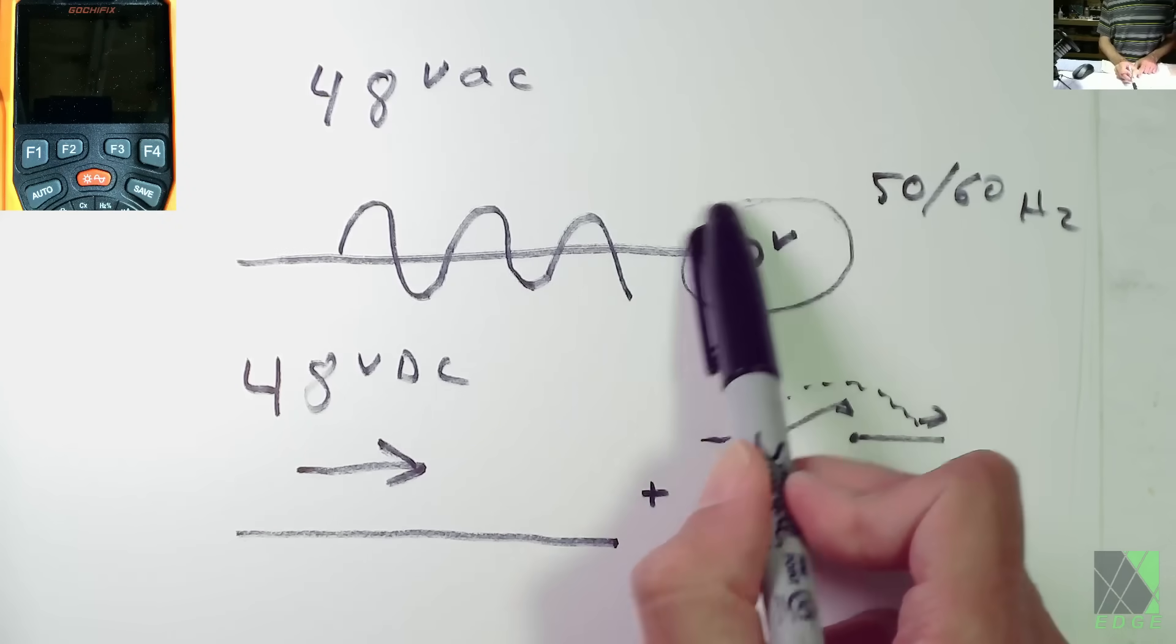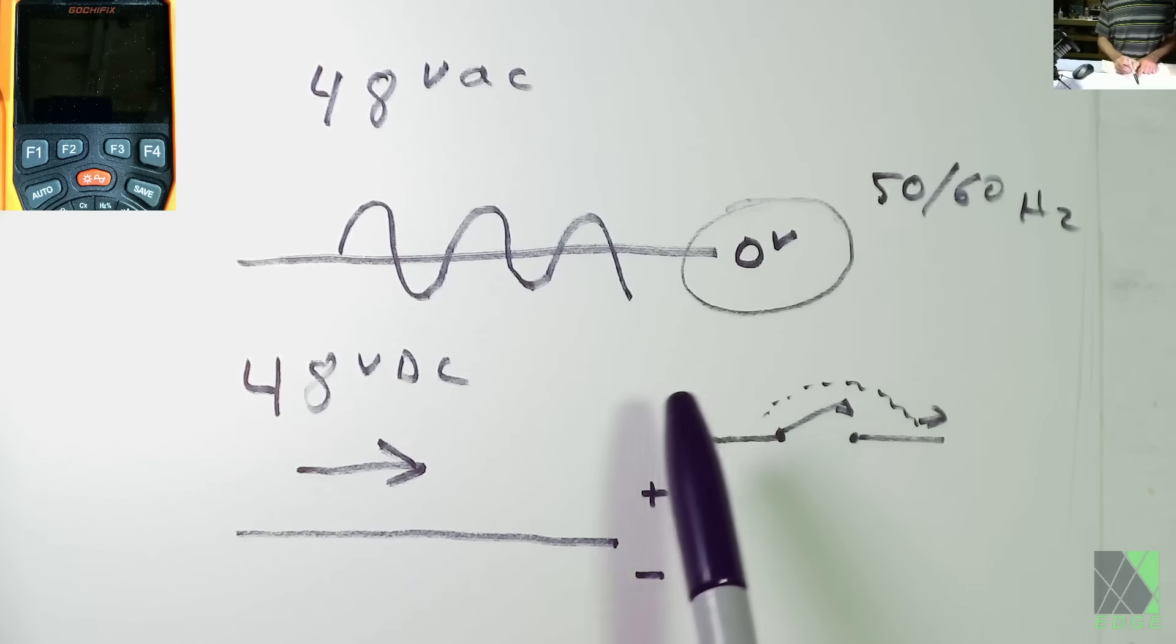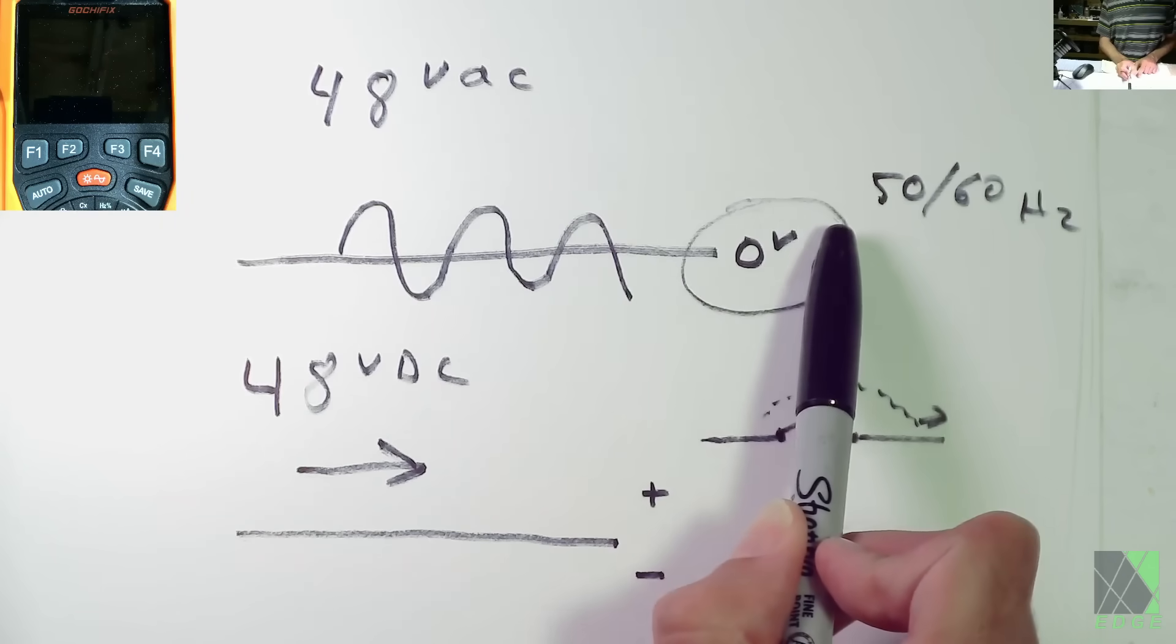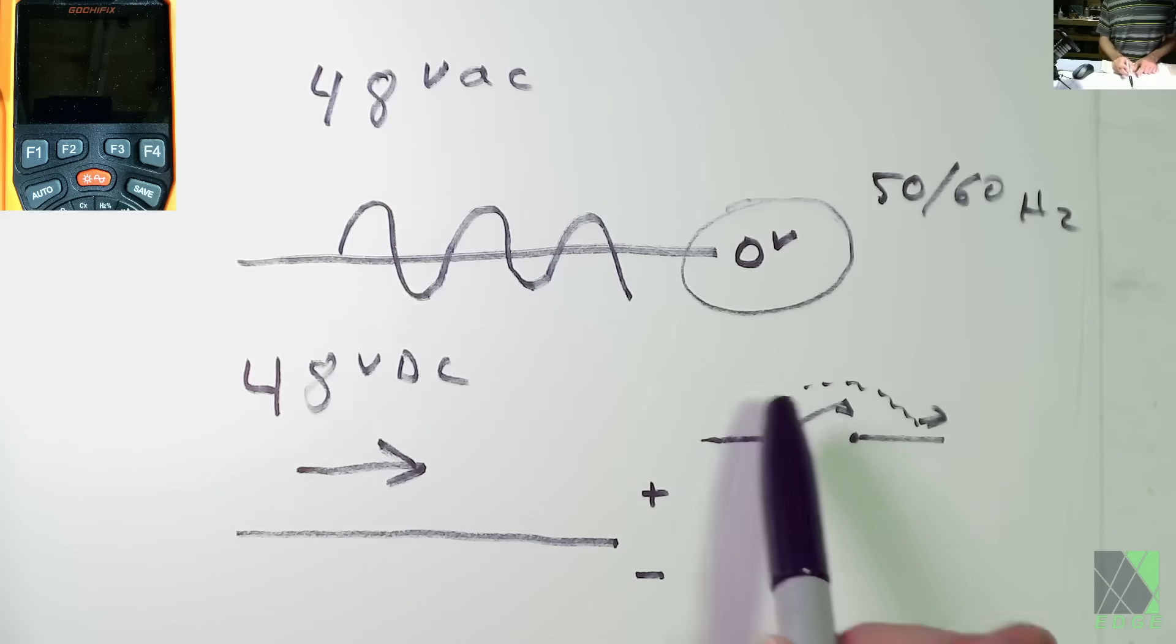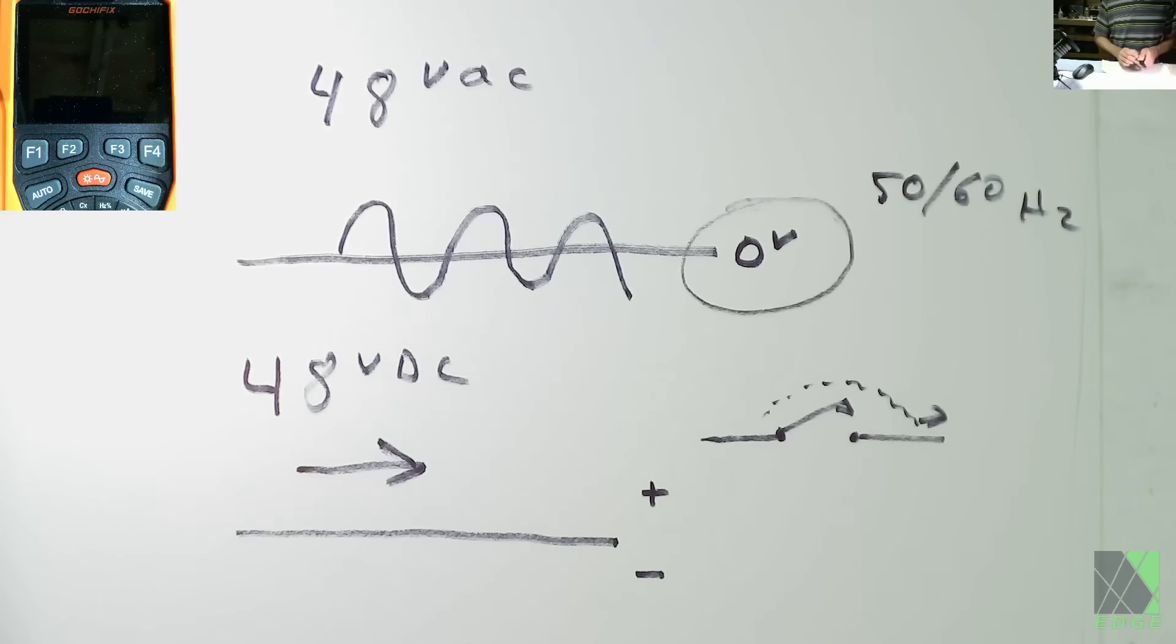But clearly at some point this AC is going to be at zero volts. That's going to help interrupt the arc. And because of this zero volts here, that means that AC, it does arc, but it doesn't behave the same as DC. DC doesn't alternate. And so when you open a gap like this, it's going to want to keep going. And because of that, you have to have a way to suppress and extinguish any DC arcs that take place.